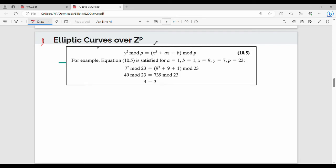We will talk about elliptic curves over Z^p where p is a prime number. The generic equation for elliptic curves over Z^p is: y² mod p ≡ x³ + ax + b mod p, where p is a prime number.